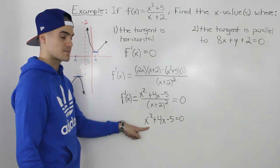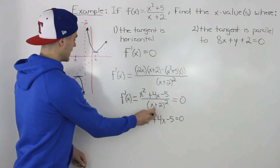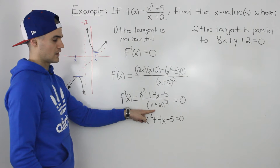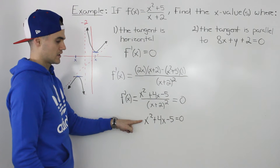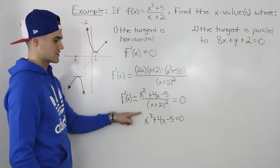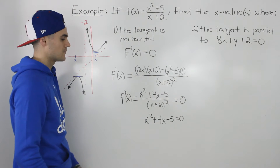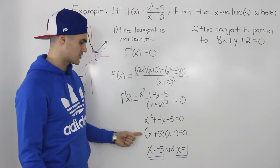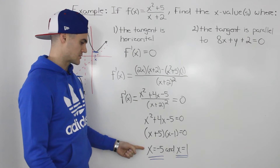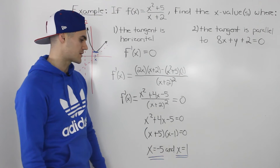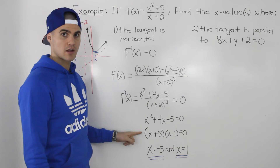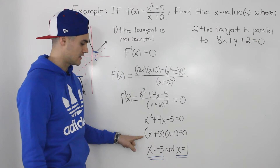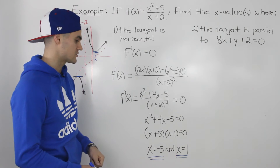At any of those x values — as long as it's not the x value of negative 2 where there is a vertical asymptote — the derivative is going to equal 0. Solving that quadratic equation, it factors smoothly and gives us x values of negative 5 and positive 1. Sometimes it won't factor smoothly, so you'd use the quadratic formula and may get decimal answers.